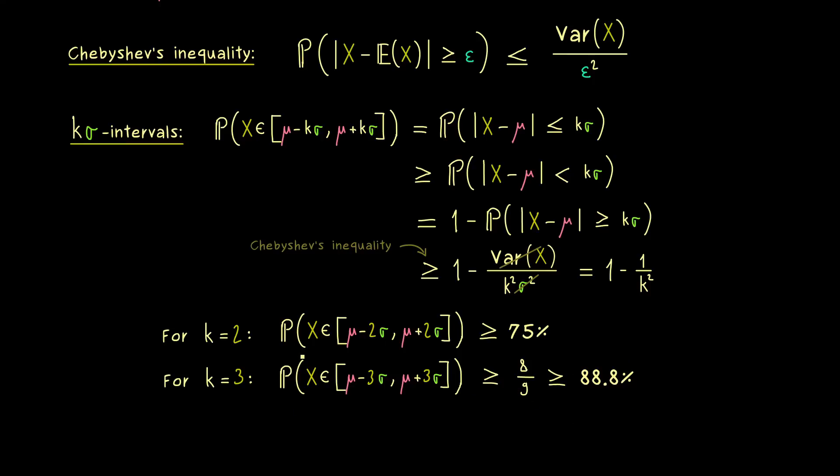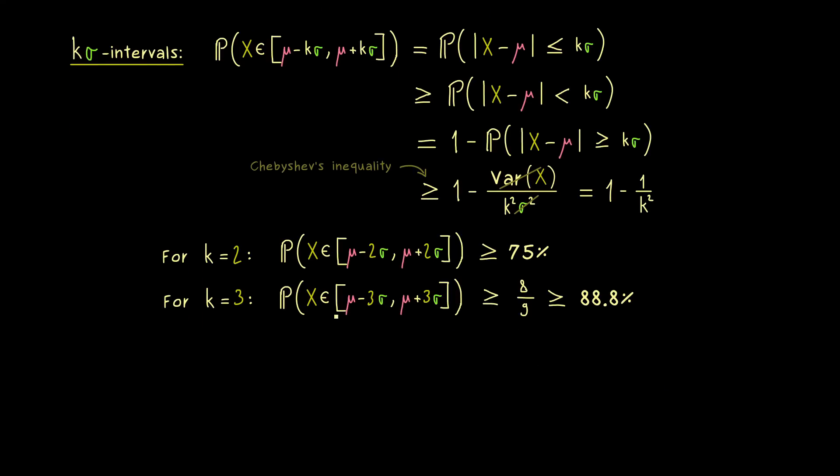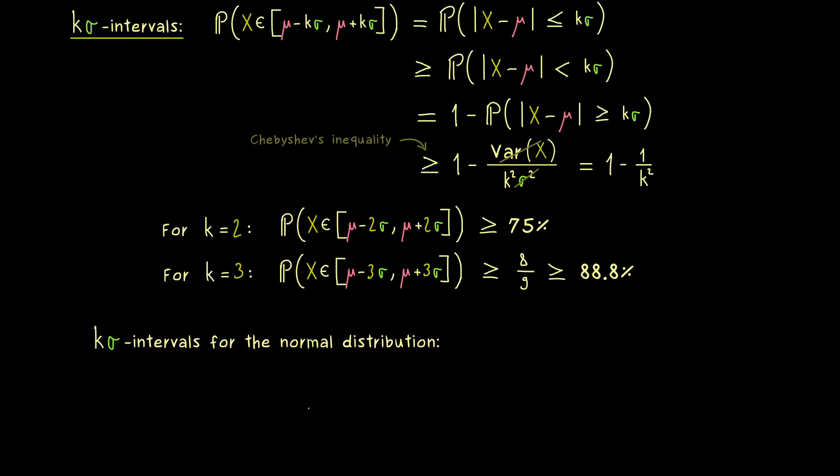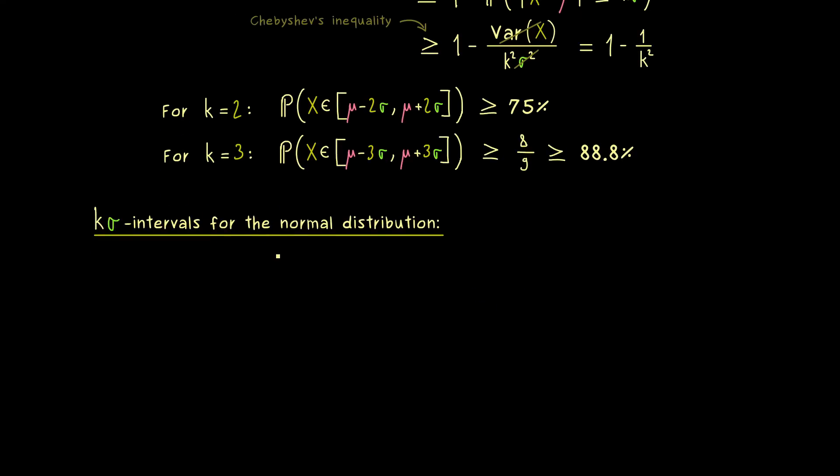However, please don't forget, here the point is that this is a general estimate, because for some particular distributions, the actual probability here could be much higher. Especially the normal distribution already shows much better numbers here. Indeed, calculating the k sigma intervals for the normal distribution is something one can do by considering the corresponding integrals. However, we can also find an estimate by simulating the normal distribution in R.